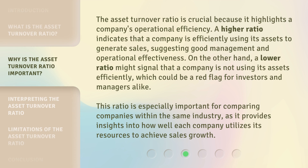The Asset Turnover Ratio is crucial because it highlights a company's operational efficiency. A higher ratio indicates that a company is efficiently using its assets to generate sales, suggesting good management and operational effectiveness. On the other hand, a lower ratio might signal that a company is not using its assets efficiently, which could be a red flag for investors and managers alike. This ratio is especially important for comparing companies within the same industry, as it provides insights into how well each company utilizes its resources to achieve sales growth.